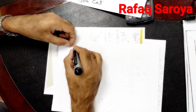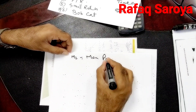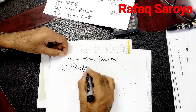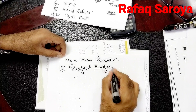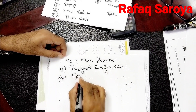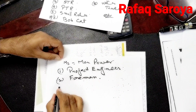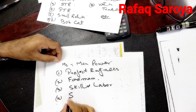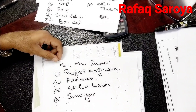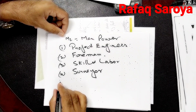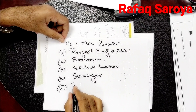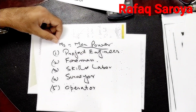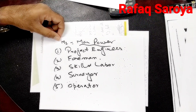After machines, M2 is manpower. First, who is responsible? The Project Engineer — he should be on site. Second, the foreman. Third, skilled labour. Fourth, the surveyor, who has a very important role in construction work, particularly in road work. Fifth, because there is too much machinery involved, we need the operator. So for manpower, we need the operator, the surveyor, the skilled labourer, the foreman, and the project engineer.